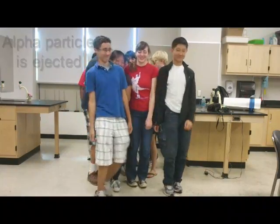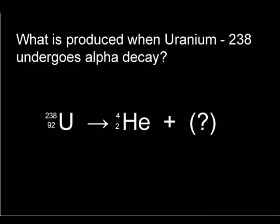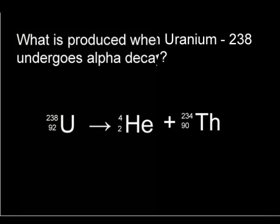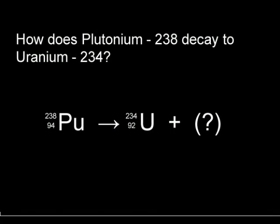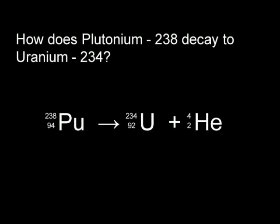Man, there aren't too many people here. What happens when uranium-238 undergoes alpha decay? It turns into thorium-234. How does plutonium-238 decay to uranium-234? It goes through alpha decay.